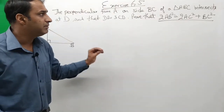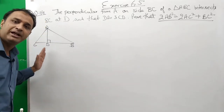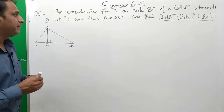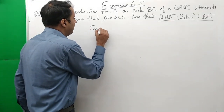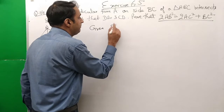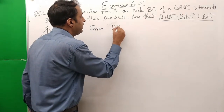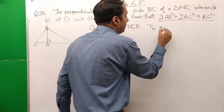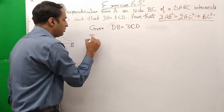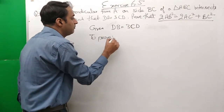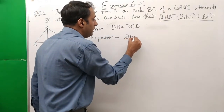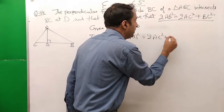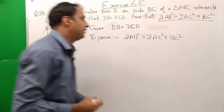In this triangle, we have a perpendicular dropped from A to side BC at point D. We are given that DB is equal to 3CD. And we have to prove that 2AB² is equal to 2AC² plus BC².